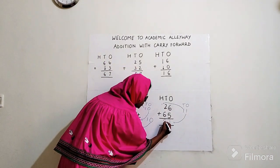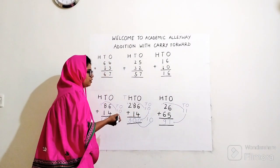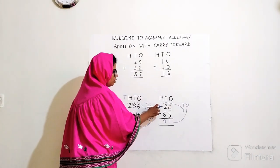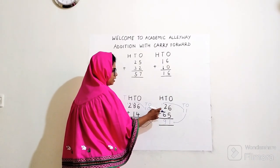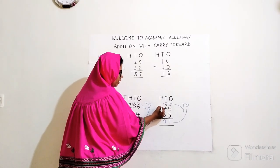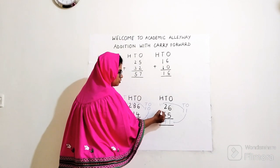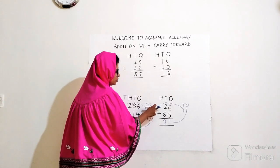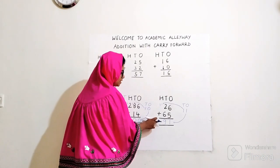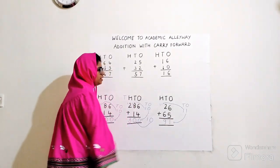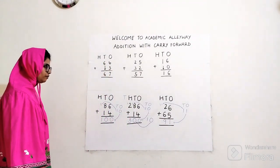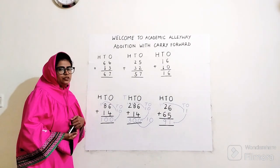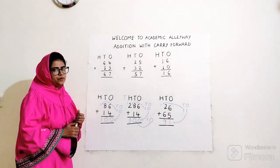Answer is 91. If I had a number below the hundreds place, the sum would have continued — for example, if there was a 1 there, it would come down as it is and the answer would have been 191. But there is no number, so my answer ends here at 91. I hope you liked my video. If you did, please share it with your friends and family and subscribe to my channel. Thank you!